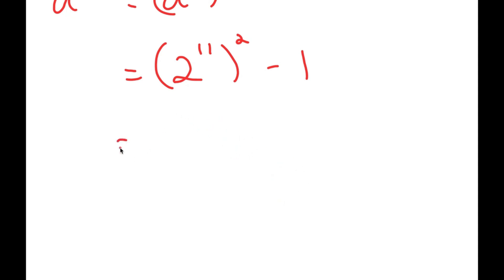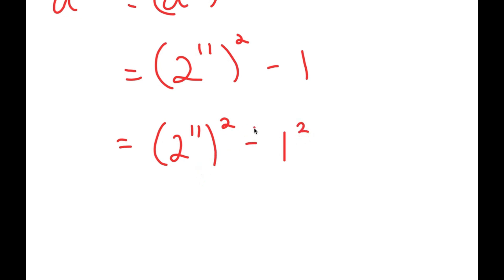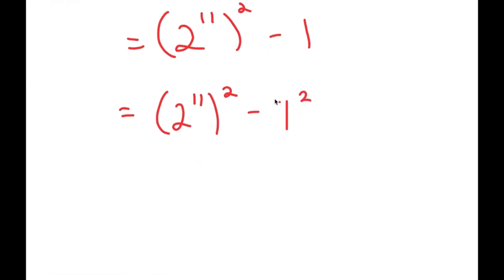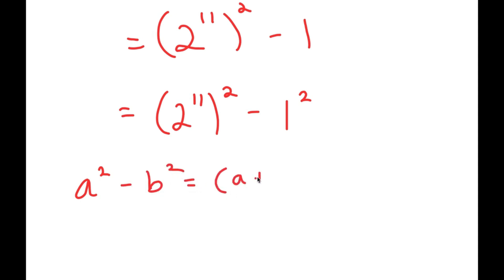Now, 1 is the same thing as 1 squared, so now I have 2 to the power of 11 to the power of 2 minus 1 squared. The reason I rewrote 1 as 1 squared is because now I can use the property a squared minus b squared is equal to a plus b times a minus b.